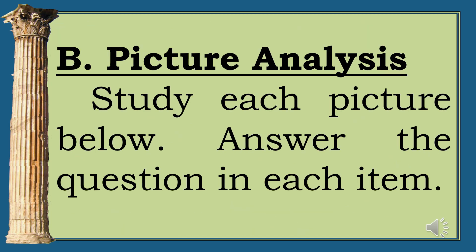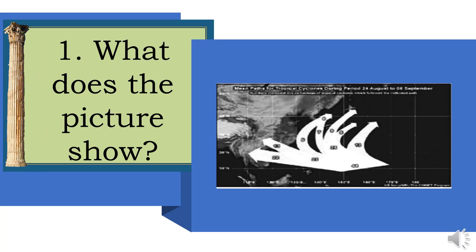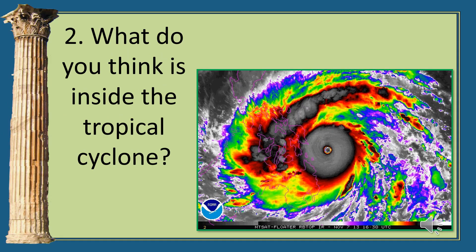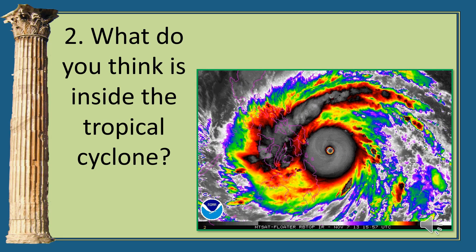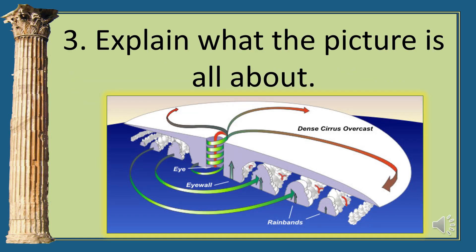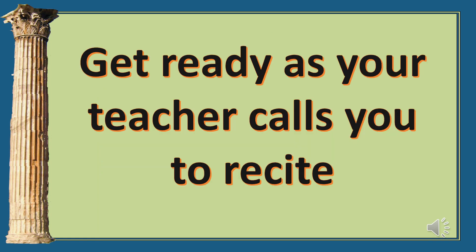Learning Task 1B. Picture analysis: Study each picture below and answer the question in each item. 1. What does the picture show? 2. What do you think is inside the tropical cyclone? 3. Explain what the picture is all about. Get ready as your teacher calls you to recite.